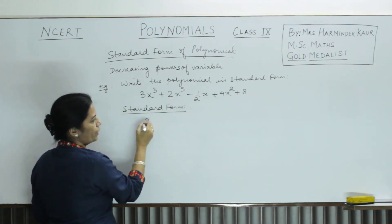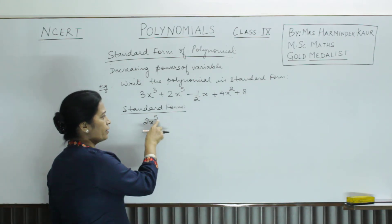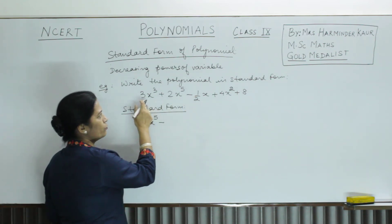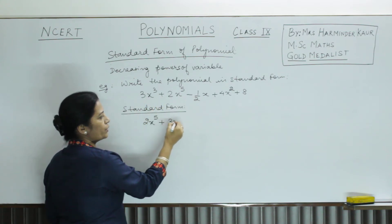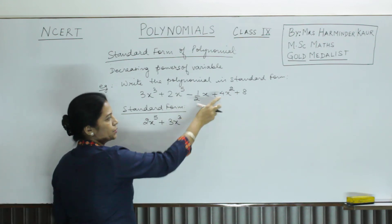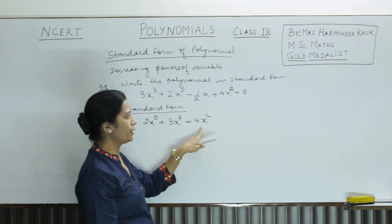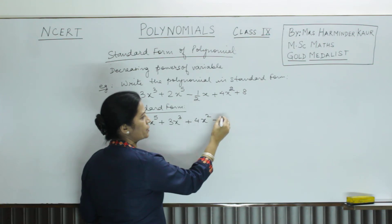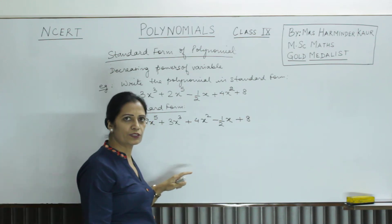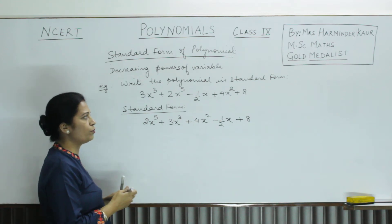The highest power is 5, so we write the first term as 2x to the power 5. After 5, the decreasing power should be 4, but there is no term with power 4. So the next term is 3x cubed. After cube, the next is the square term, which is 4x squared. Then x to the power 1, which gives us the half x term. And last is the constant term, where there is no x. This is how we write the standard form of a polynomial.